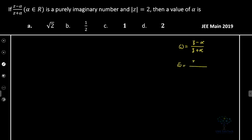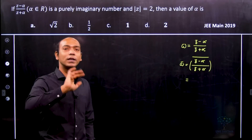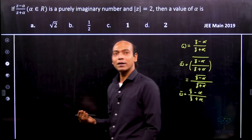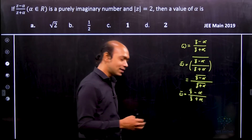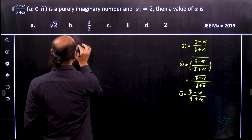Let's calculate omega-bar, the conjugate of omega. The conjugate of (z + α)/(z - α) is applied to numerator and denominator separately, giving (z̄ − α)/(z̄ + α). Since alpha is a real number, its conjugate is just alpha itself, so omega-bar equals (z̄ − α)/(z̄ + α).